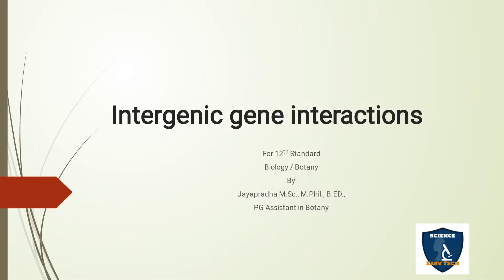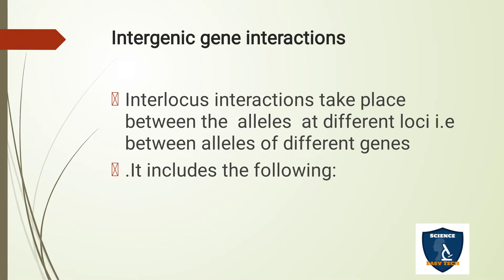Today's topic is intergenic gene interaction. Interlocus interactions take place between the alleles at different loci, that is between the alleles of different genes. The gene located on the chromosome at a particular point is called a locus. In a gene, alleles are present. The gap between two different genes is called interloci.